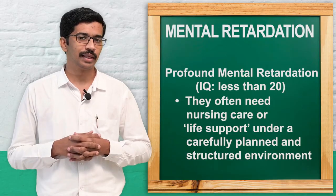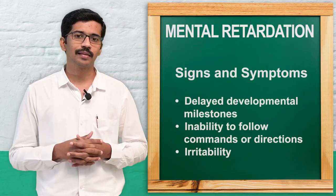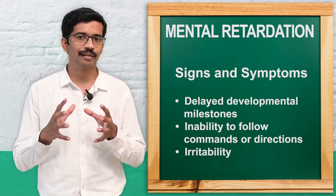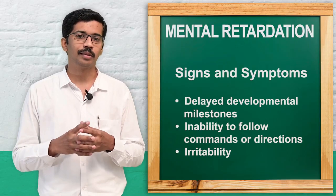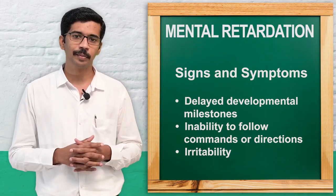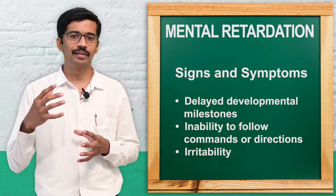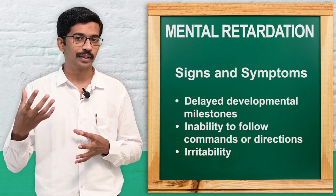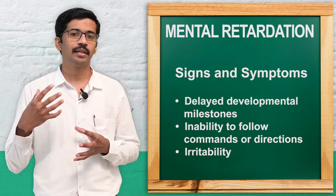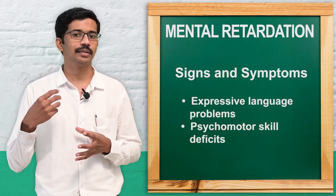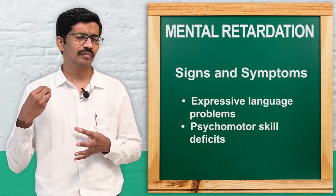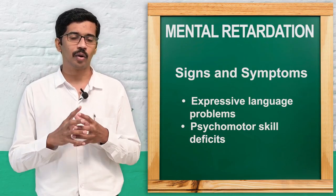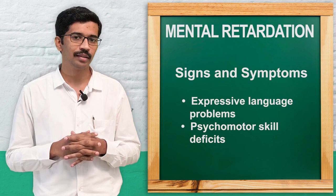Now the clinical features of mental retardation. Since it is a developmental disability, all developmental milestones will be delayed. They may have problems with learning, all psychomotor activities will be delayed, they are unable to follow commands, they will be easily irritable, and they may display inappropriate sexual behavior. These are some of the common clinical features.